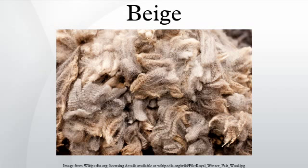Beige was used as a color term in the modern sense in France beginning approximately 1855–60. The writer Edmond de Goncourt used it in the novel La Villa Lisa in 1877. The first recorded use of beige as a color name in English was in 1887.